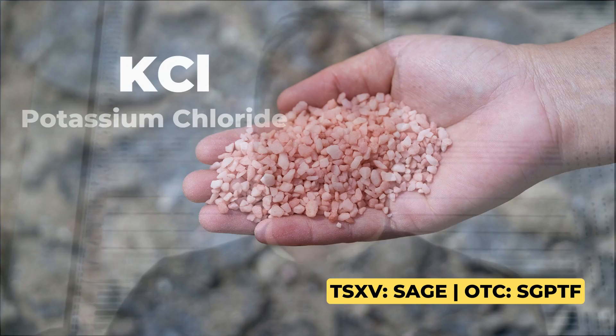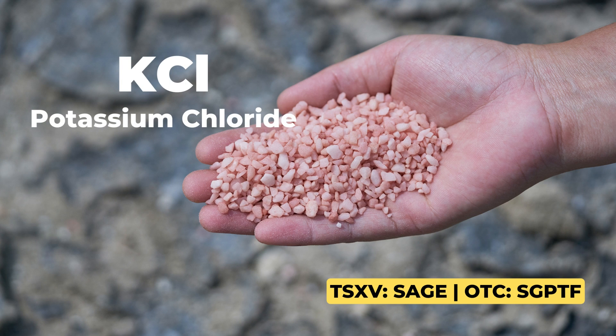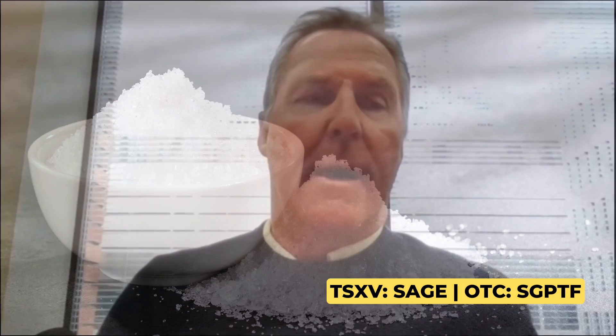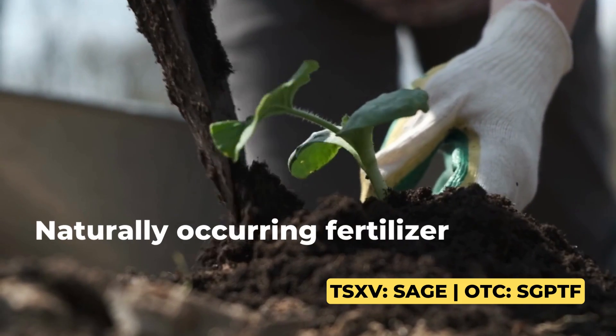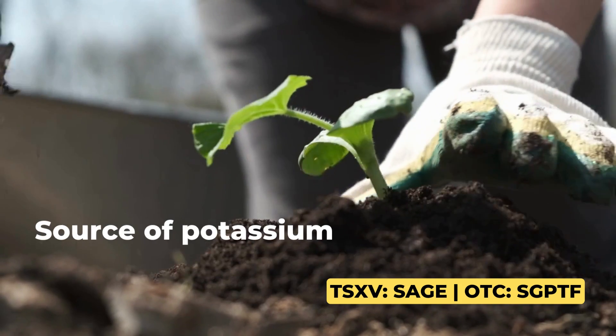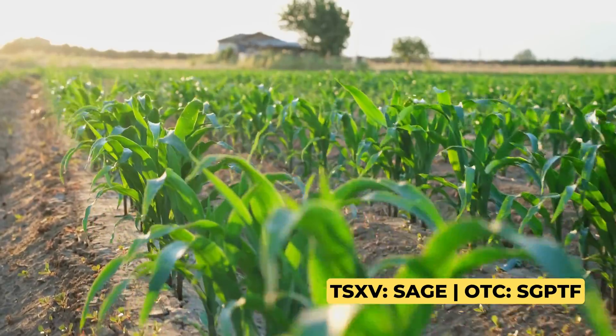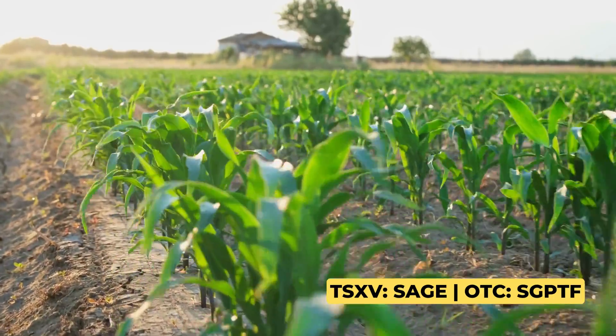Potash has two forms. There's KCl, which is potassium chloride, and it's found in sylvanite along with NaCl, which is sodium chloride — they're both salts. KCl is a naturally occurring fertilizer and source of potassium, ideal for row crops like corn, soybeans, wheat, and things like that.